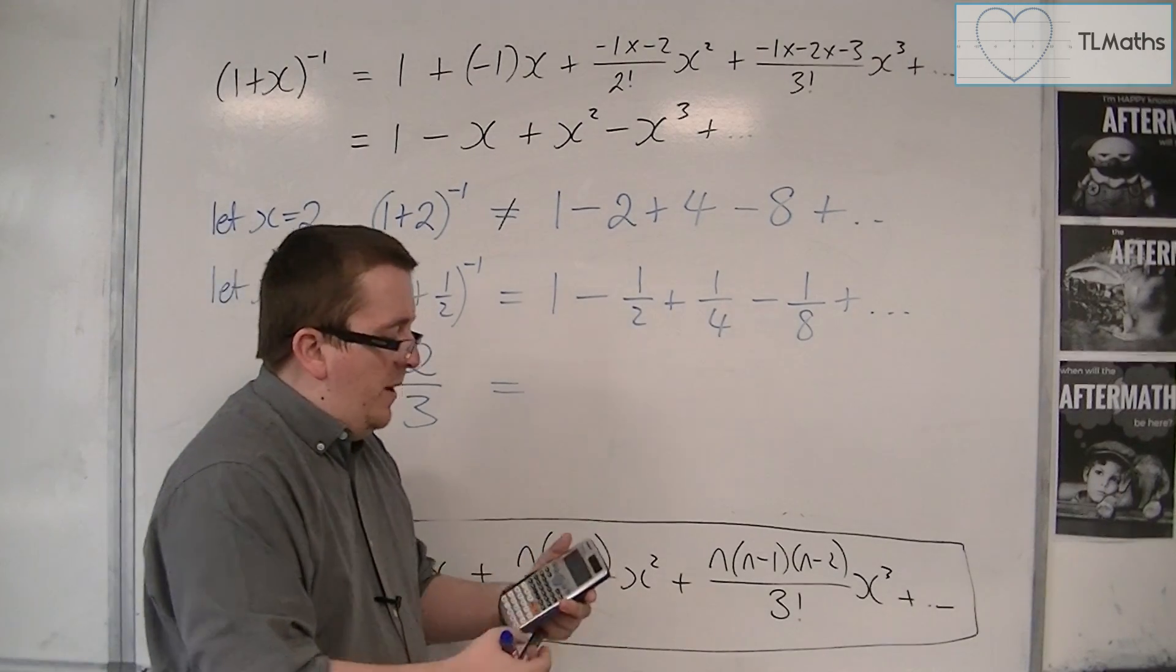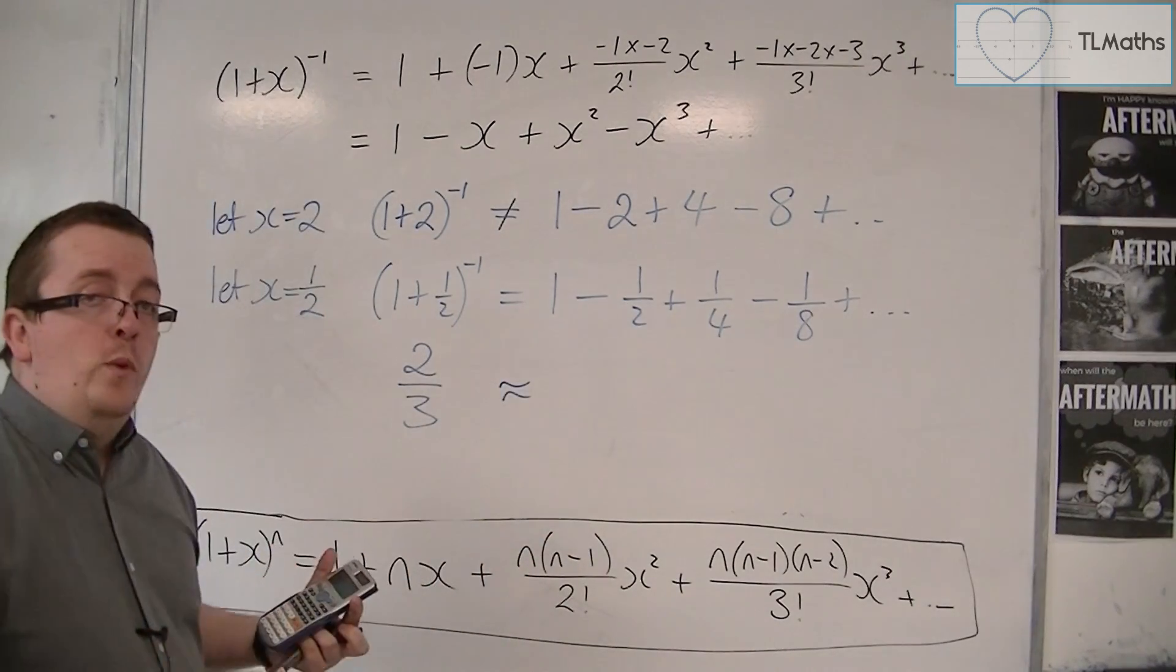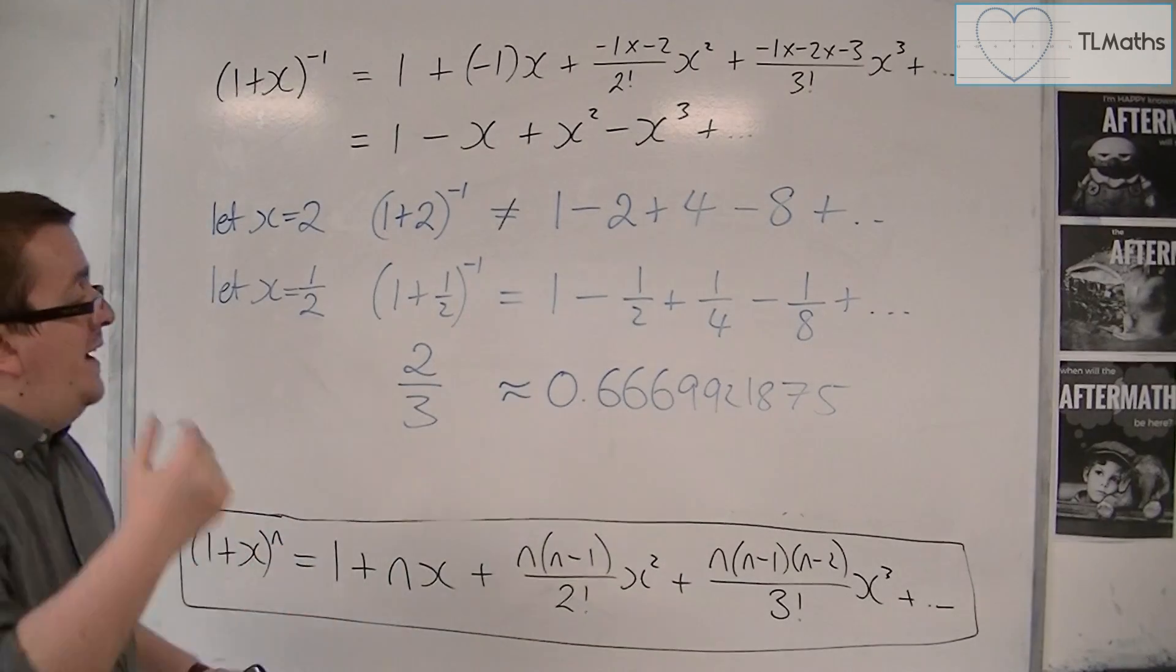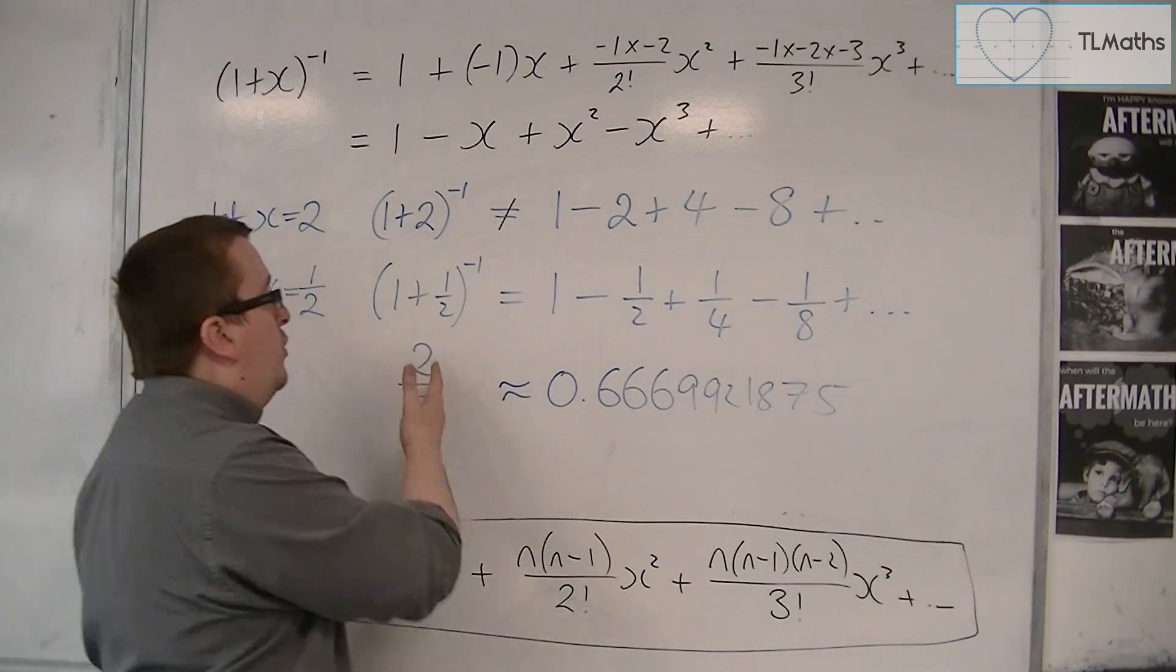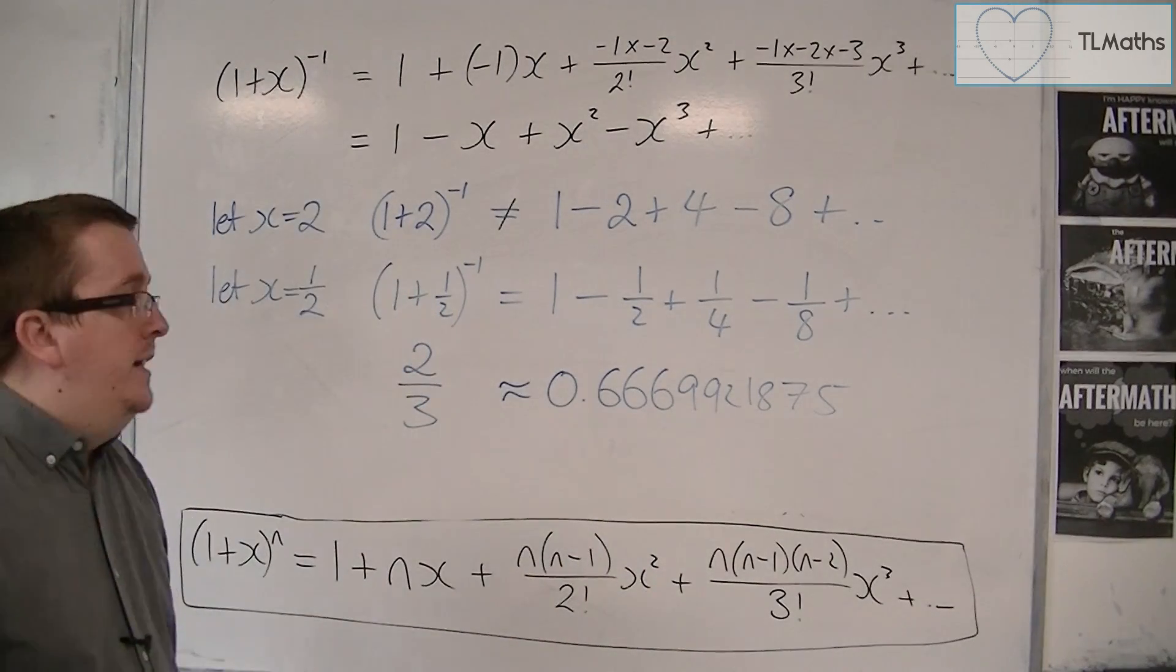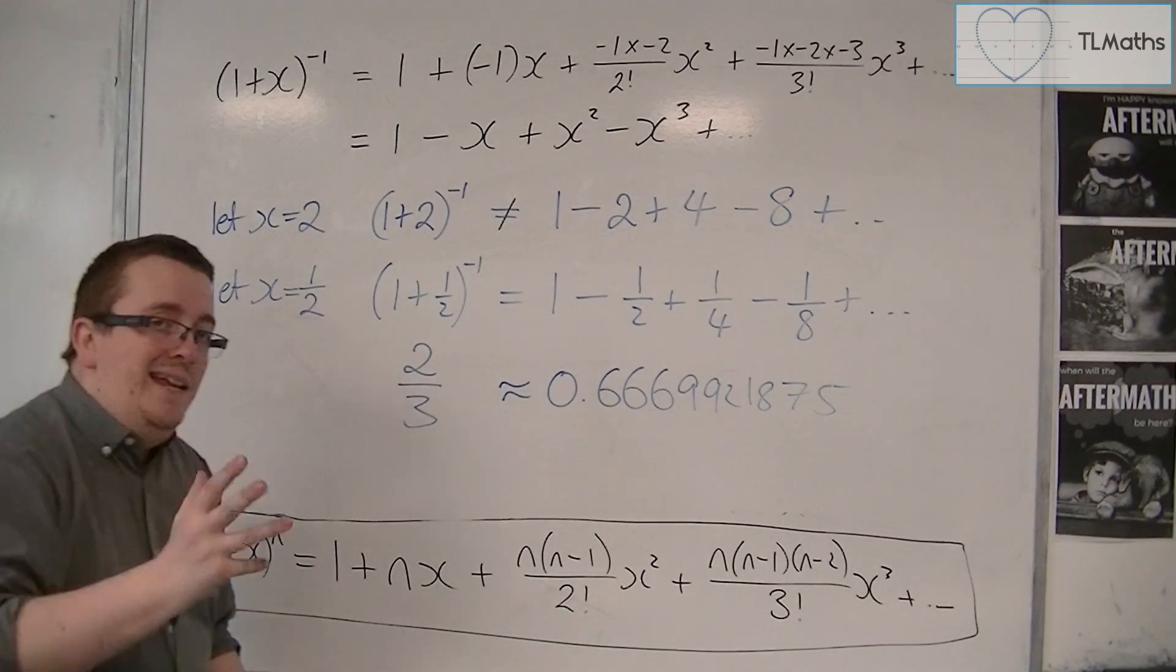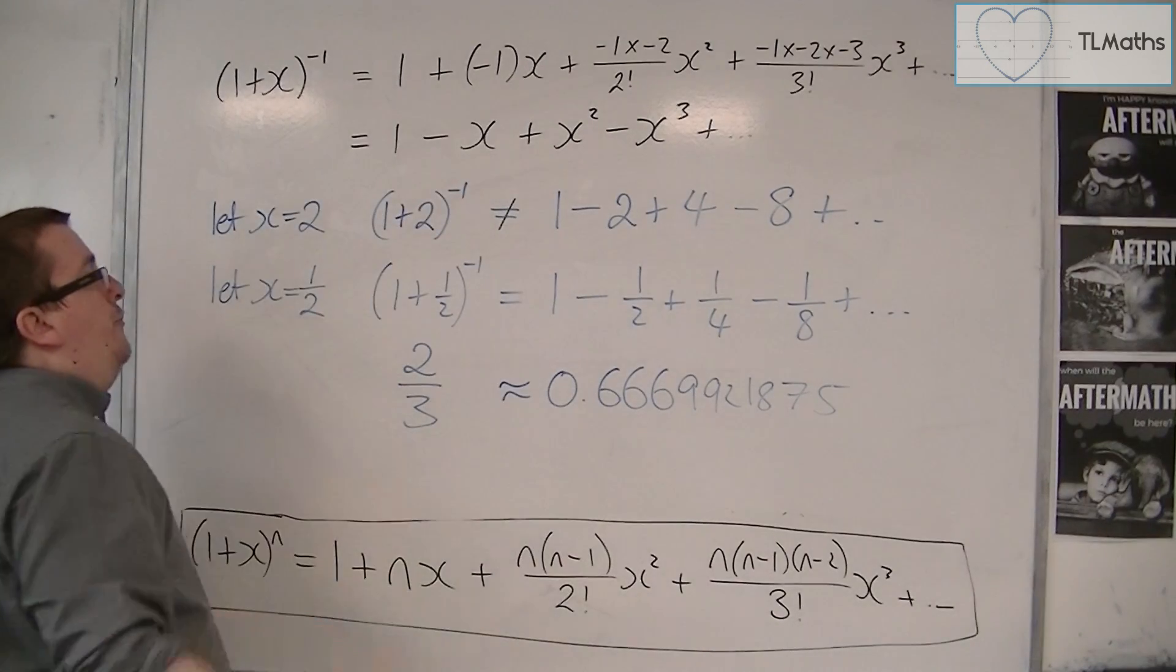Let's press the SD button there, and what we're getting, all the way up to the 1 over 1024, we're getting 0.6669921875. So in actual fact, we can go up to 1 over 1024, and we've got 2 thirds accurate to 2 decimal places, and the more terms that I add on, the closer this is going to get to 2 thirds. So clearly, it works for some values of x, but it doesn't work for other values of x.